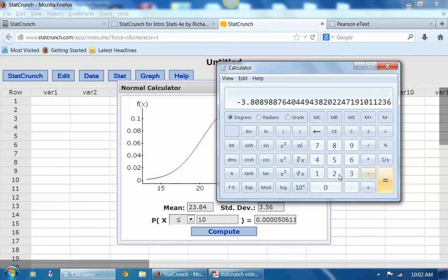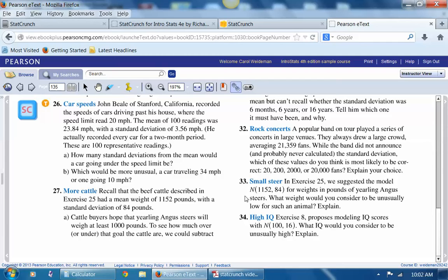And then if we compare that to the car going 34, 34 minus the mean of 23.84, and then divide by 3.56. So that car is about 2.85 standard deviations above the mean. So the car going 10 is much more unusual. Okay, so let's go back. That was one problem I wanted to do with you.